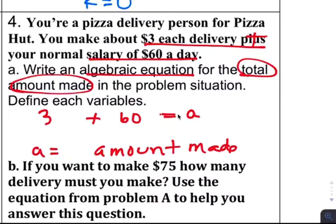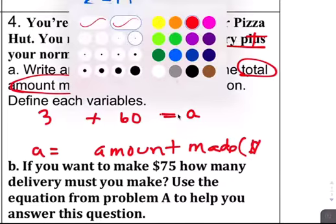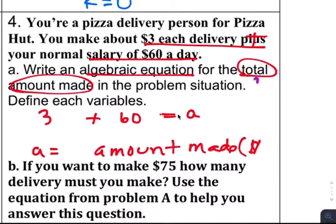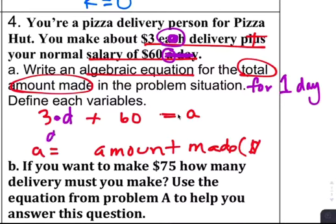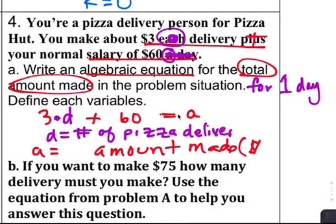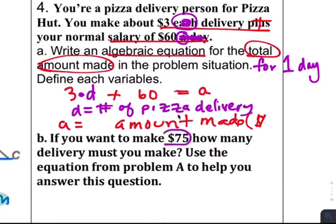Now, what I told students in class was in this problem situation for one day, how much do we want the amount made for one day? That should help you decide where to put the times, either A or each. Because A is the same thing as each day, a day, per day, all means the same. If you want the total for a day, then this doesn't count. So each delivery gets a multiplication times D, because every delivery you make, you make extra money. So D equals the number of pizza deliveries.